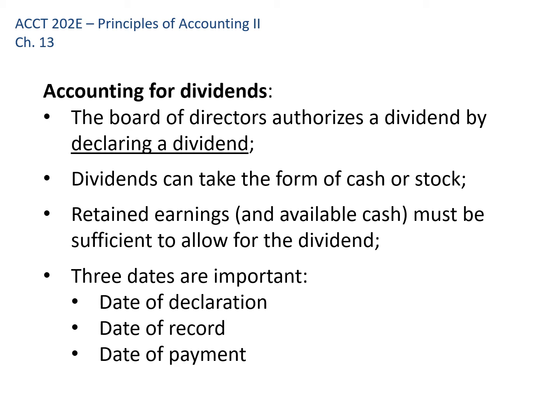The dividend can take the form of cash or stock. We'll talk about cash first, then stock. The board is going to look to see if there are sufficient retained earnings and sufficient cash on hand — if it's a cash dividend — to allow payment. Is this a responsible thing to do, or should the dividend be a little less so the company holds more in reserve? Three dates are important from an accounting perspective.